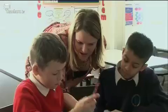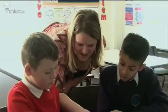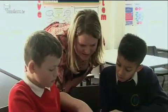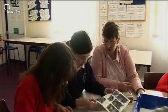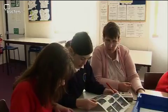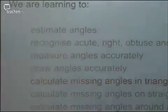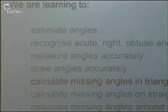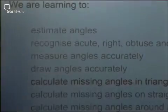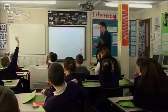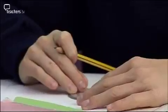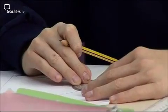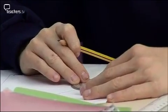They've got ownership of the lesson, but yet you've got ownership of what you're trying to achieve at the end of it. So that's some of the theory. How does it translate into a practical lesson? Assistant Head John Crowley is teaching a maths lesson about angles.